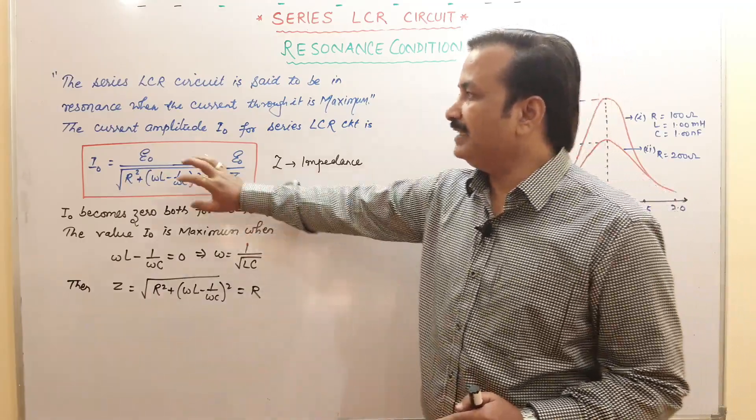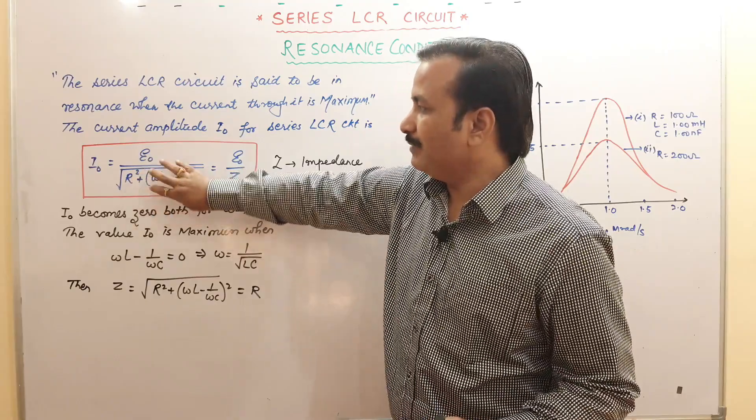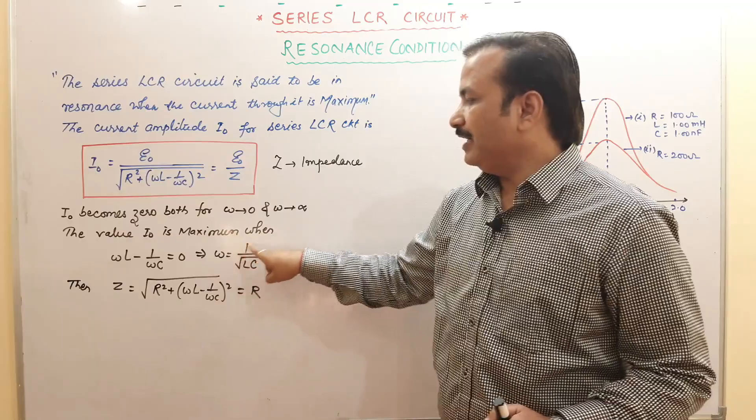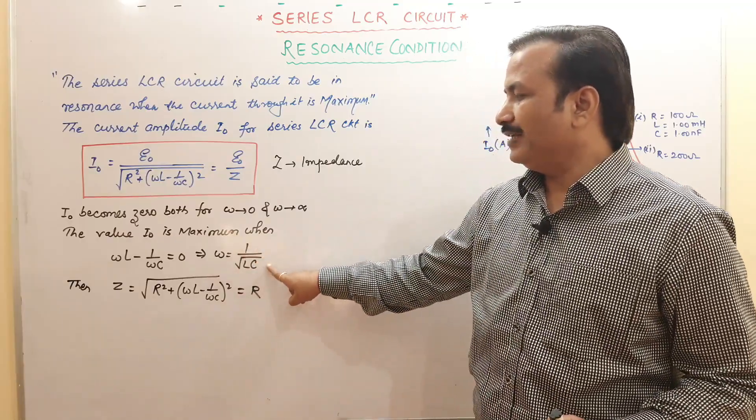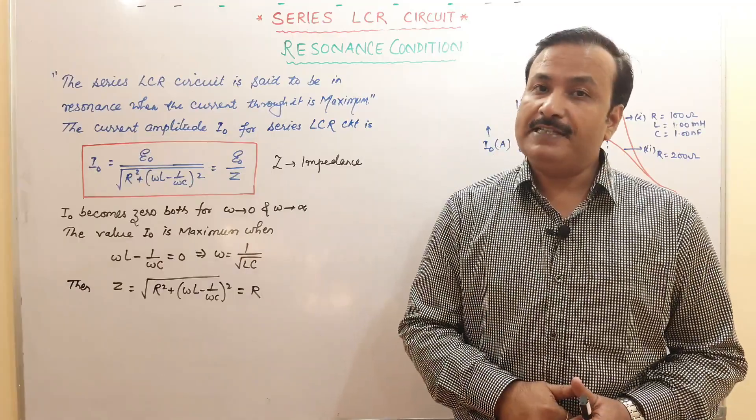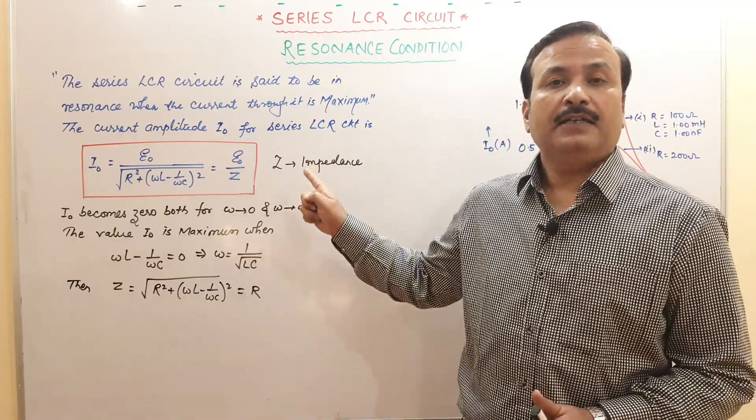For current maximum, this should be minimum. When will this be minimum? At least you have to make this value zero. When we make this zero, we are getting omega is equal to 1 upon under root lc. This frequency is the natural frequency of the LCR circuit.